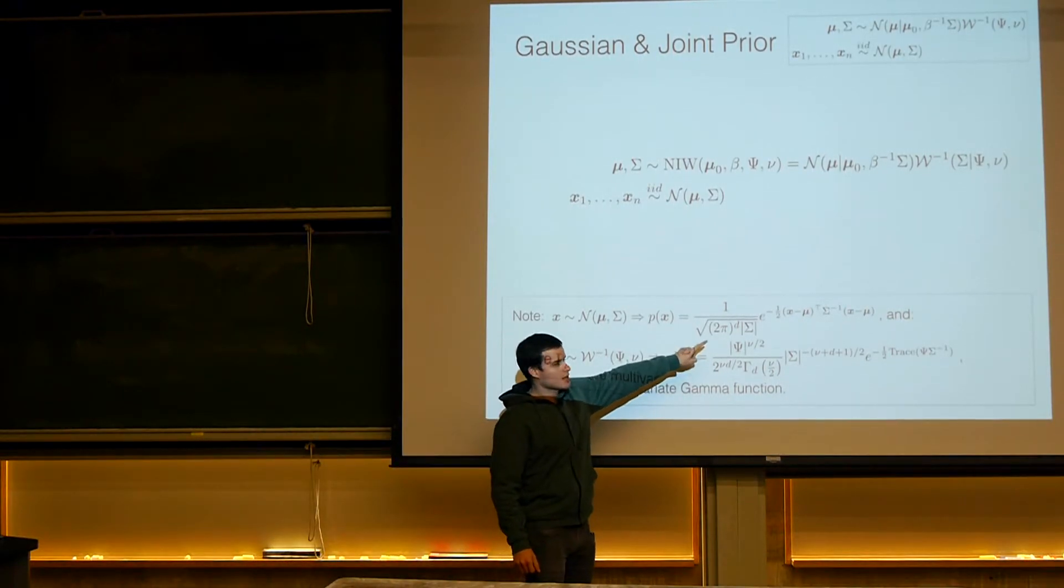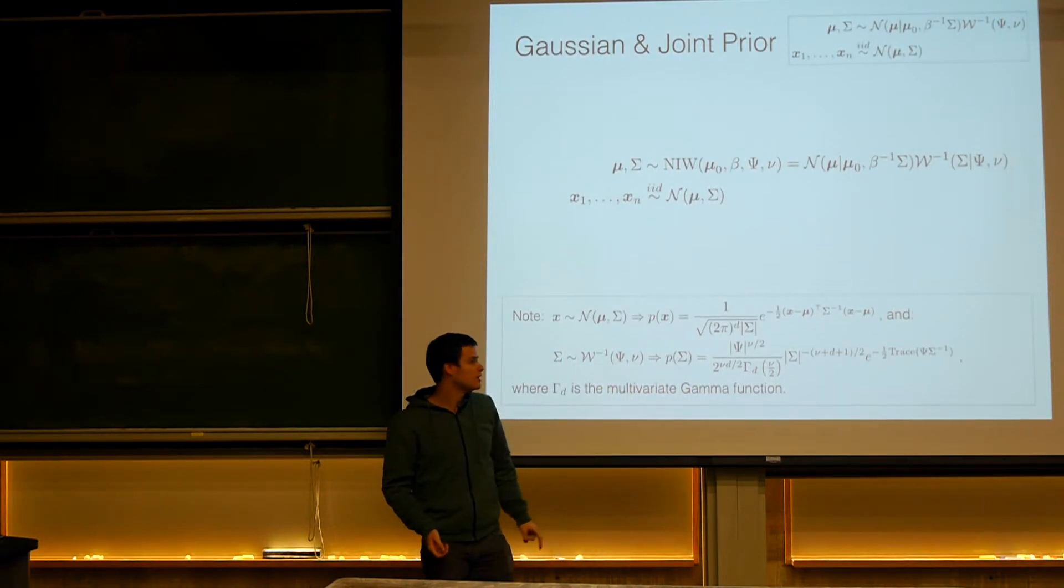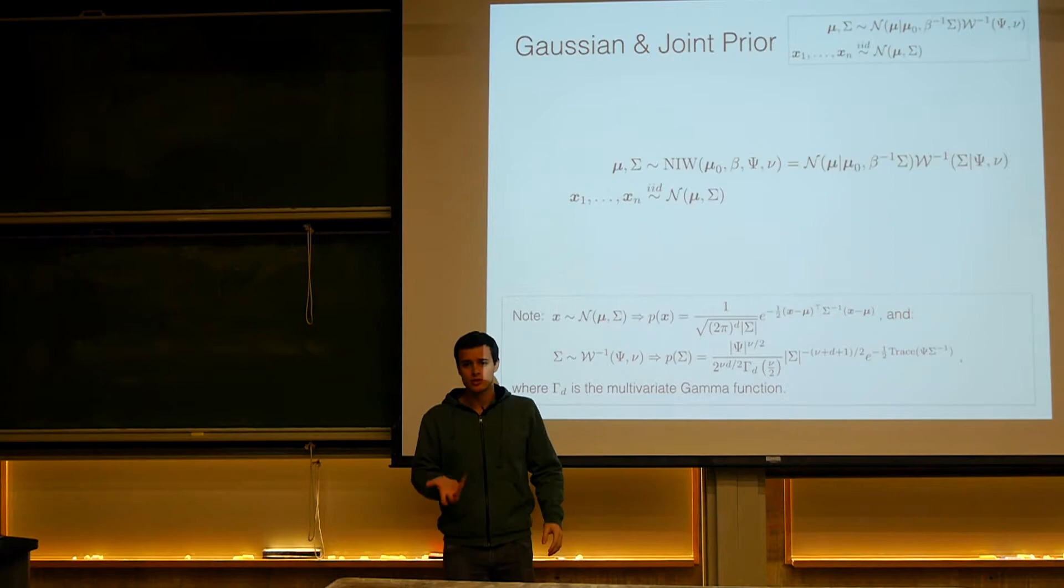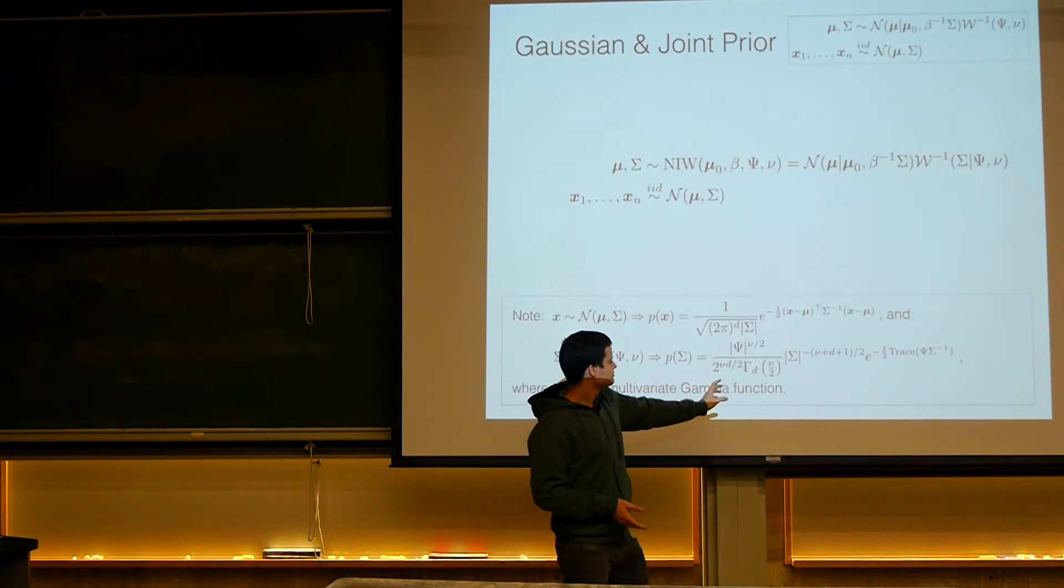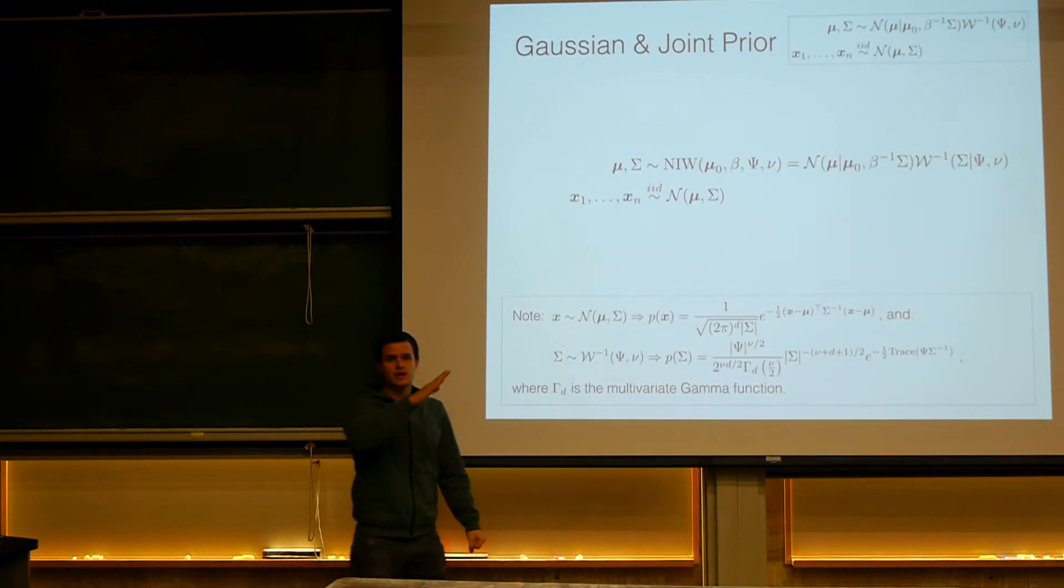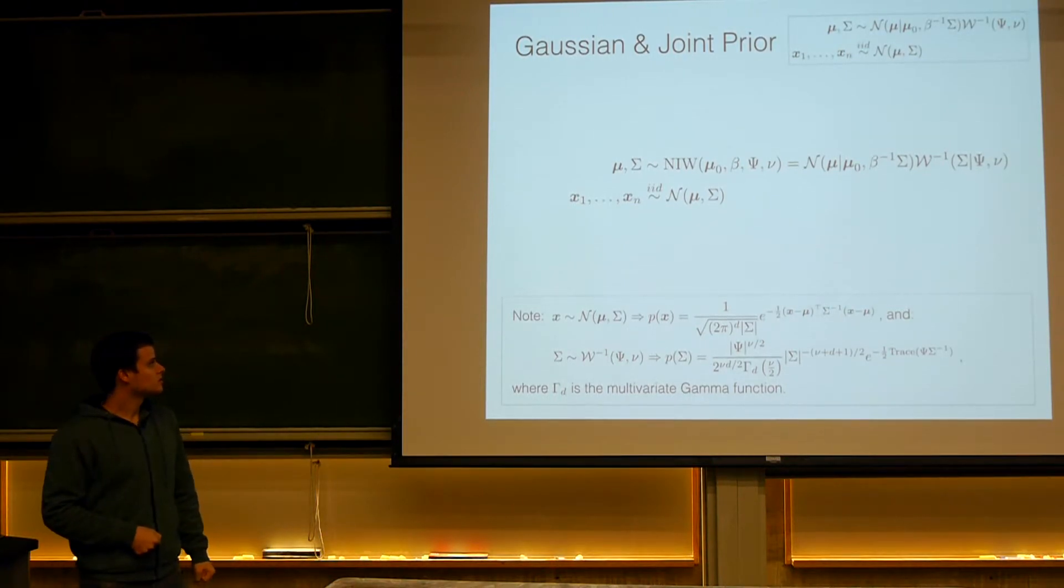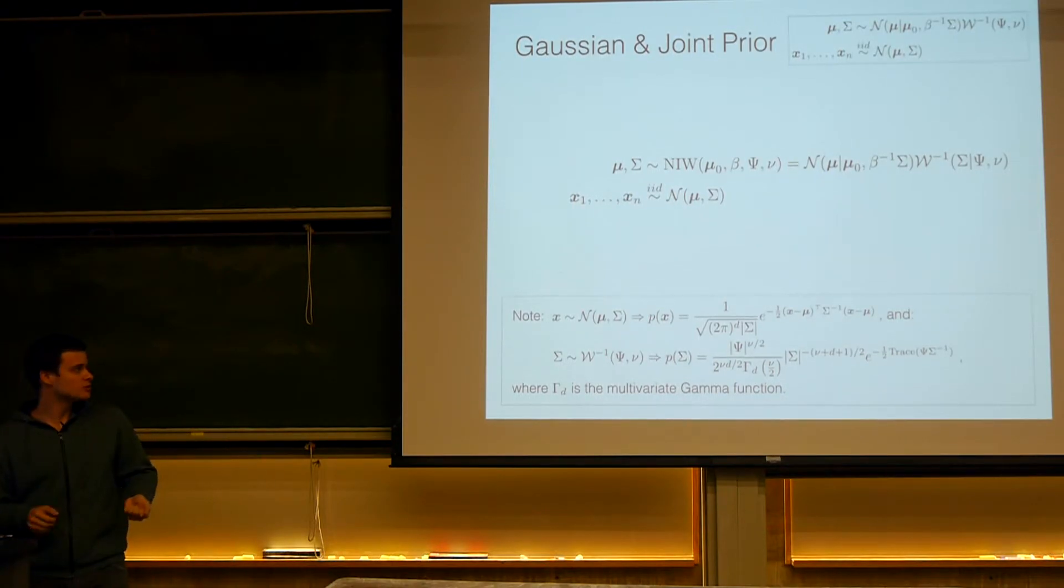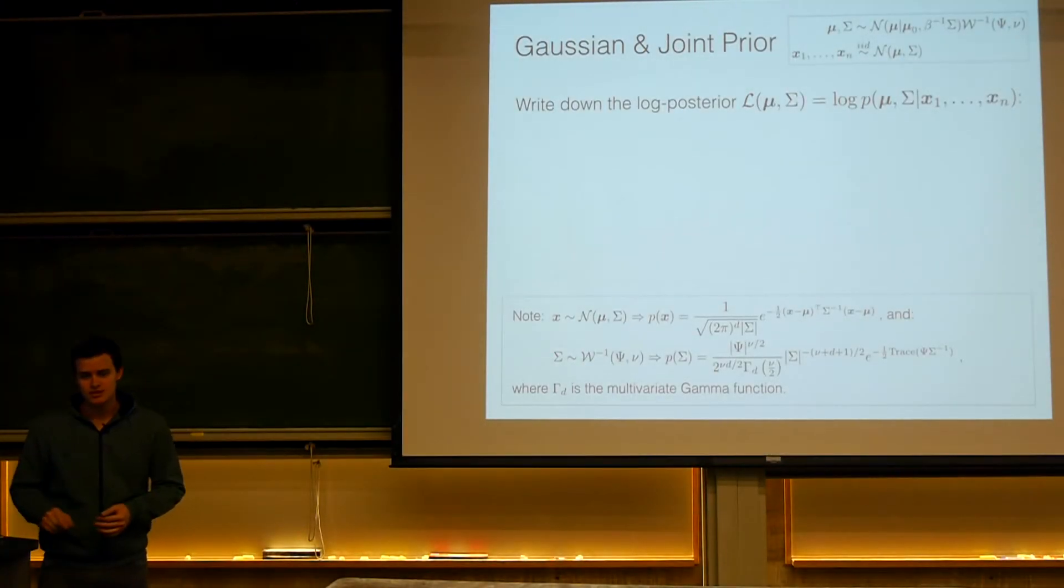For people who are not familiar, the absolute value notation represents a determinant of a matrix. And this is a gamma function. This is a multivariate gamma function. It has a weird definition, but you don't need to care about it because it will only appear as a constant term. And the trace of a matrix is some of the diagonal entries of the matrix. Okay? So we're going to do the same thing that we did before. So the first thing you need to do is to derive the log posterior. And you're going to have more time for this. And you can ask any questions you have.